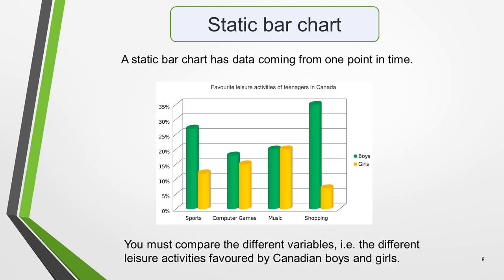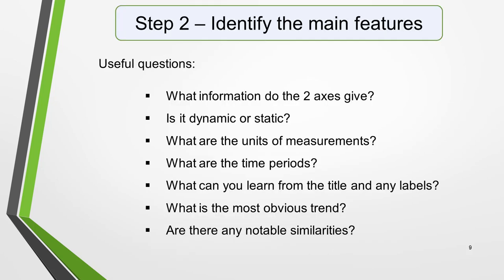Alternatively, a bar chart may be static, with the data coming from one point in time. For this type of graphic we would need to compare the different variables — for example, the different leisure activities favoured by Canadian boys and girls. The graphic in bar chart questions should not be difficult to interpret. Each question has been created to test your language skills, not your mathematics ability. All you're looking for are the main features, and these will usually be the easiest things to spot. The type of key features will depend on whether the bar chart is dynamic or static.